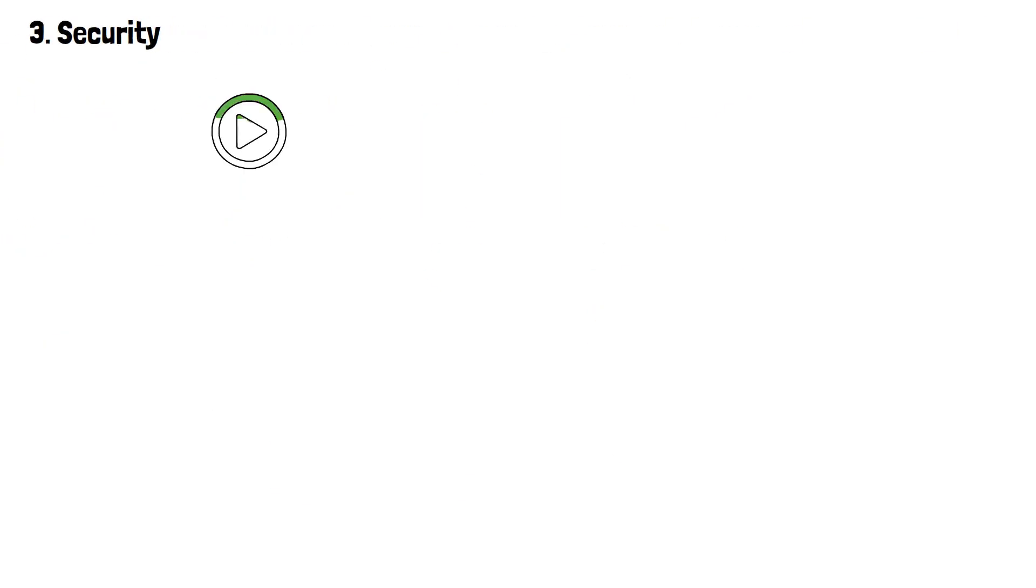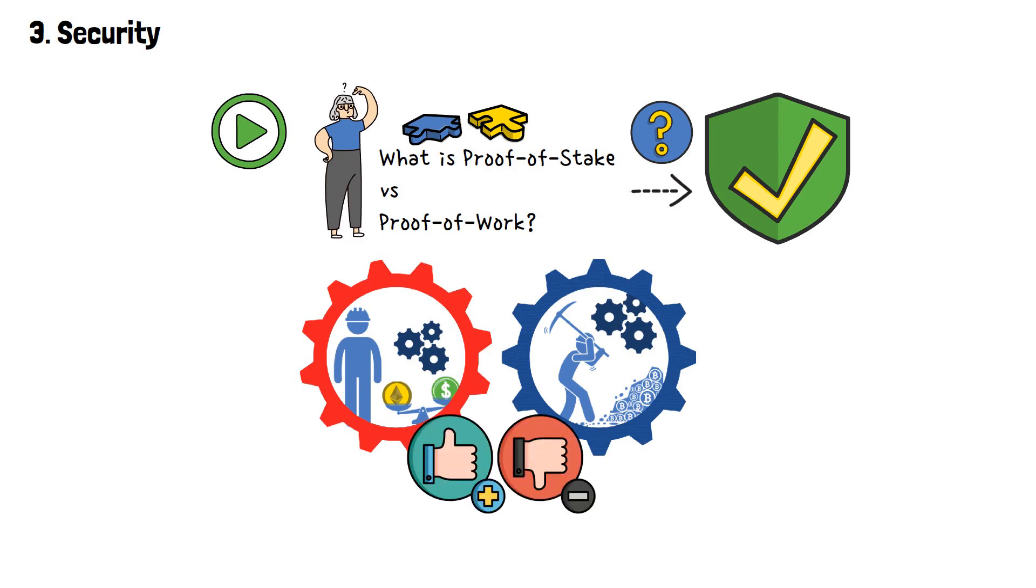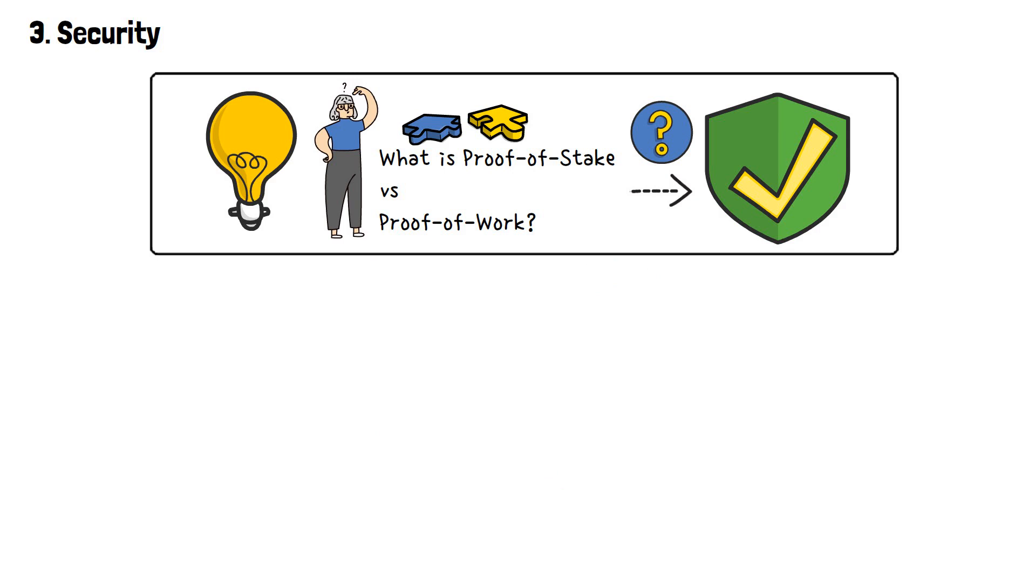To continue solving the what-is-proof-of-stake versus proof-of-work puzzle, the question of security must be addressed. Both of the consensus mechanisms have their advantages and disadvantages when it comes to this question. In order to properly understand it, it's important to understand the concept of what's known as a 51% attack.